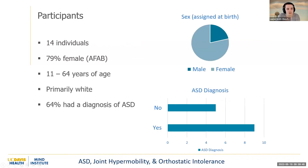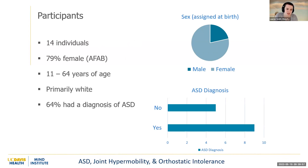We had a total of 14 individuals. 79% of the sample was female or assigned female at birth. Ages ranged from 11 to 64 years of age. The sample was primarily white and 64% had a diagnosis of autism.